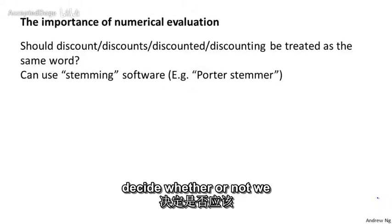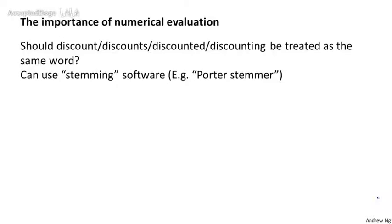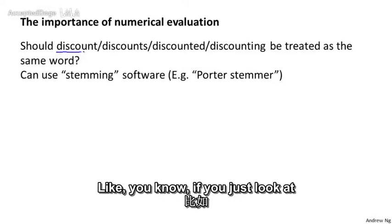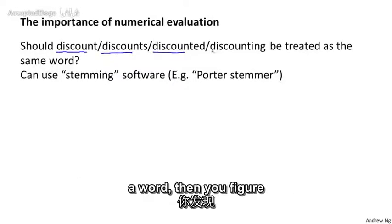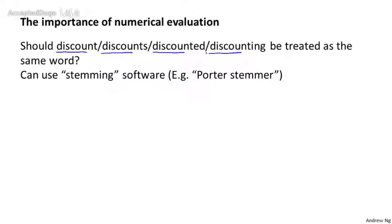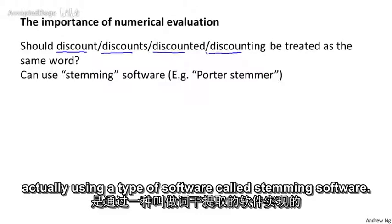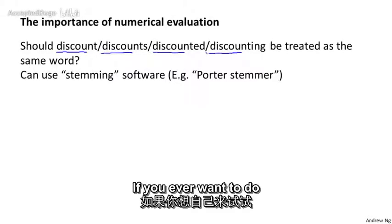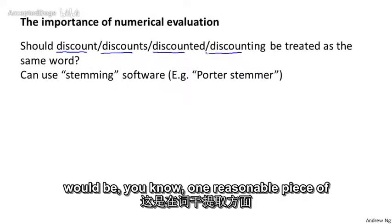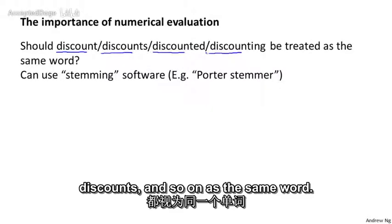Let's say we're trying to decide whether or not we should treat words like discount, discounts, discounted, discounting as the same word. So maybe one way to do that is to just look at the first few characters in a word. Then you figure out that maybe all of these words are roughly, have similar meanings. In natural language processing, the way that this is done is actually using a type of software called stemming software. If you ever want to do this yourself, search on a web search engine for the Porter stemmer, and that would be one reasonable piece of software for doing this sort of stemming, which will let you treat all of these words—discount, discounts, and so on—as the same word.